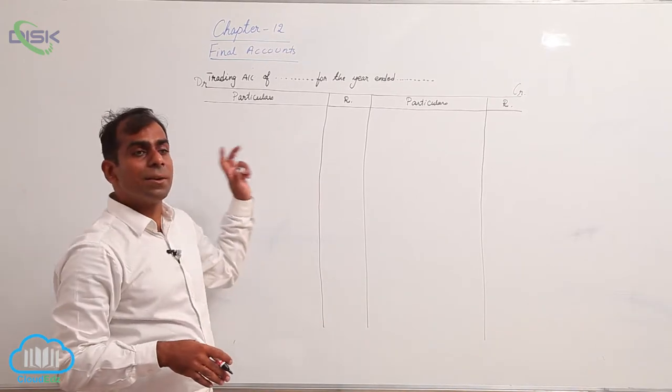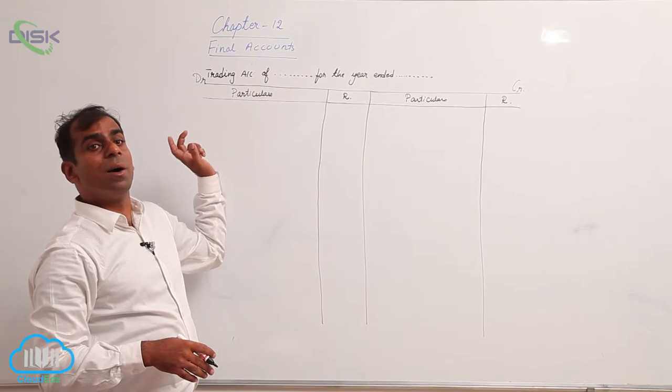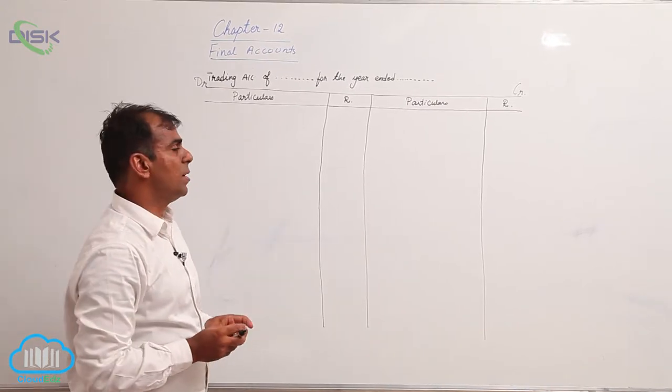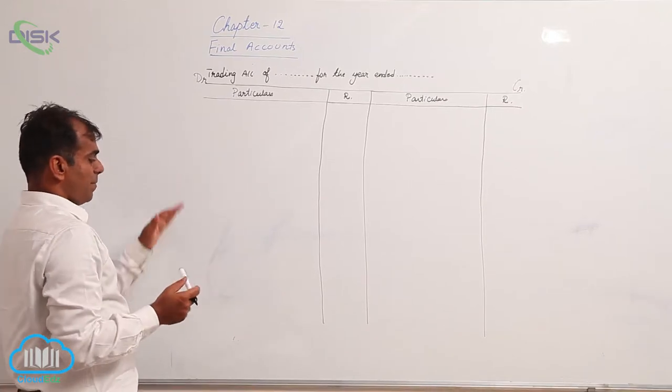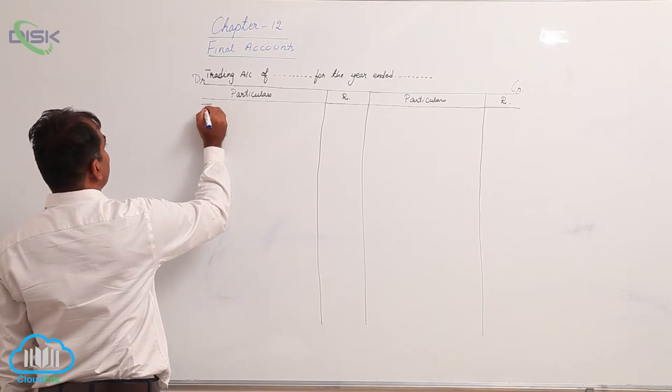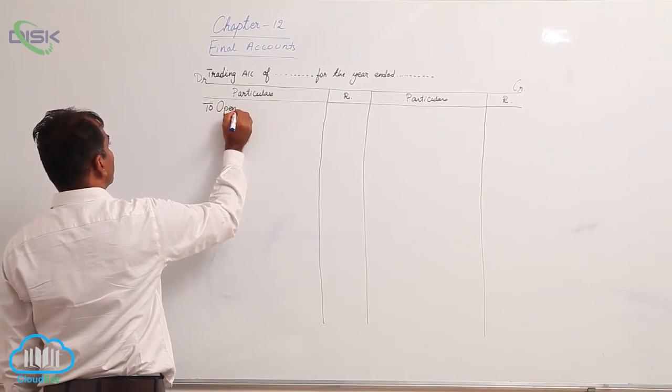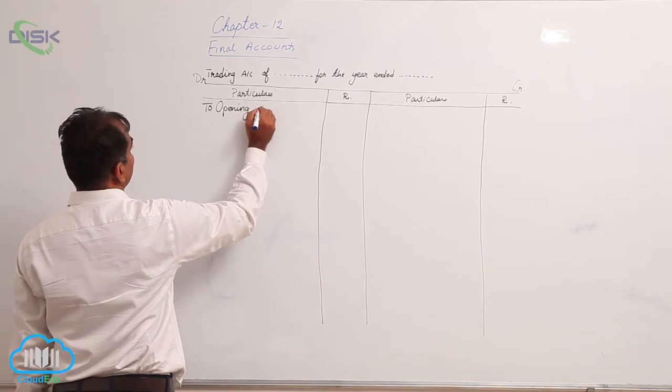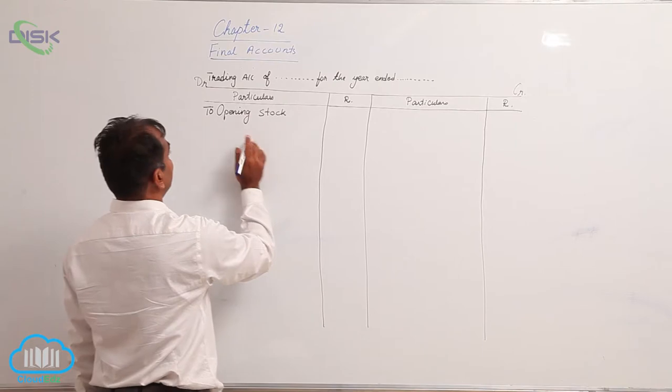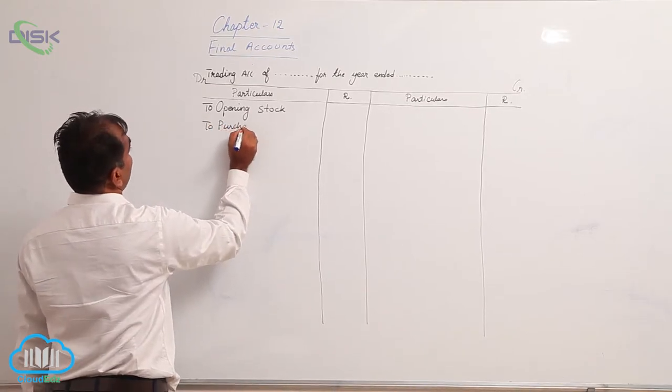What are generally recorded? We already discussed we have to record nominal accounts in trading and P&L account. Let us see some nominal accounts that appear in trading account. Usually, if you don't do the adjustments before preparing trial balance, then opening stock would be appearing on the debit side.